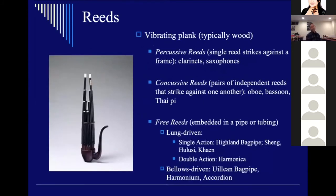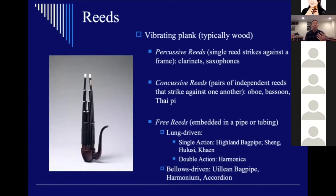Next are reed instruments. A reed is a vibrating plank, typically a piece of wood, and reeds come in all shapes and sizes. There are three basic categories. The first is the percussive reed — a piece of wood attached to a tube via a ligature, which beats against the tubing and the vibration gets funneled through the tube. The most common percussive reeds are the clarinet, which will be discussed in more detail by Wang Mingzhi, and the saxophone.